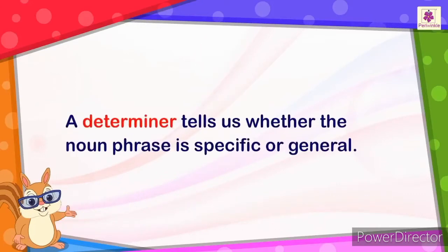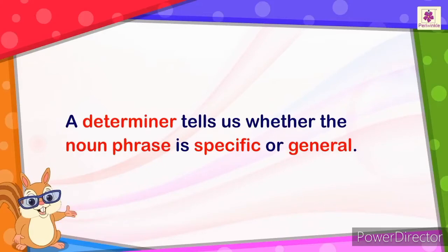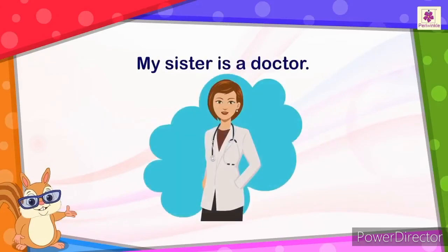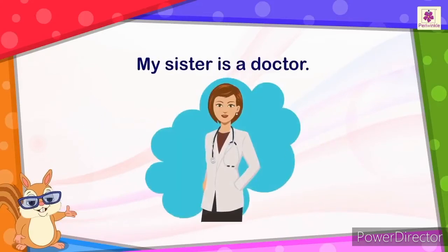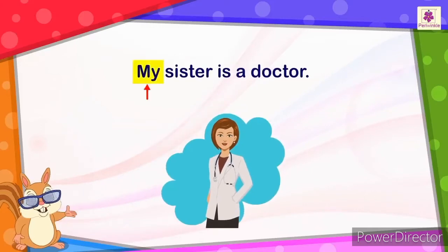A determiner tells us whether the noun phrase is specific or general. For example: 'My sister is a doctor.' Here 'my' is a specific determiner and 'a' is a general determiner.